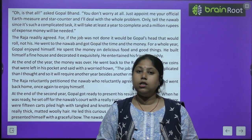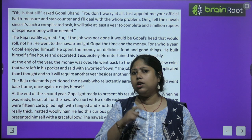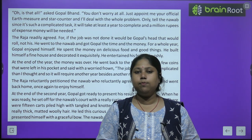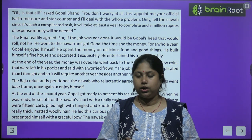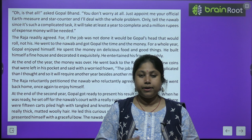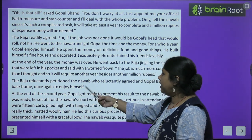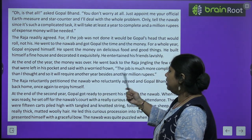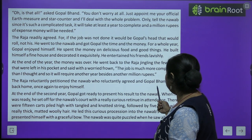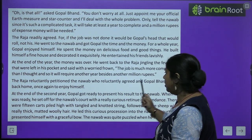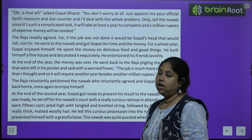Gopal said, 'I need one more year and another million rupees — please arrange it.' The Raja reluctantly petitioned the Nawab, who reluctantly agreed, and Gopal Bhant went back home once again to enjoy himself.